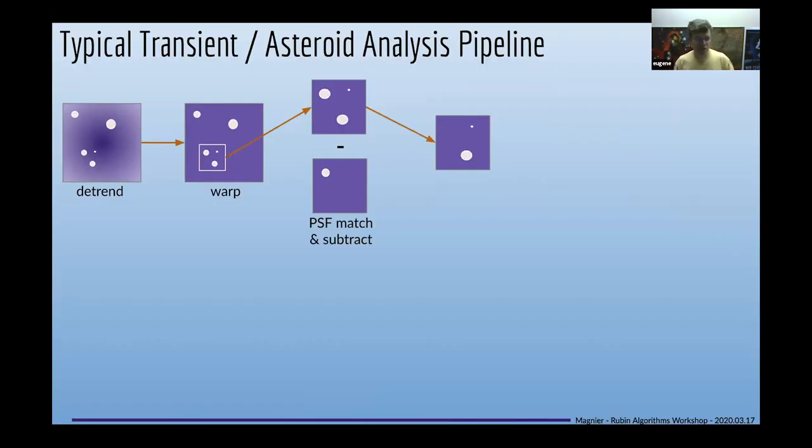In PanSTARRS we use all three concepts. We use warp-warp differences for detecting asteroids within the night, warp-stack differences for supernovae across the three pi, and stack-stack differences within the medium deep field. Once you've done some matching of the PSF and subtracting your image, you now have an image with only the differences in it. You now have to go and identify the things in that image that are the garbage.